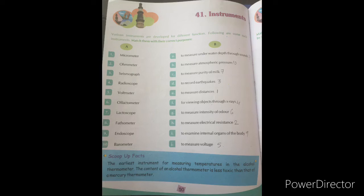Now six is olfactometer. Olfactometer is used to measure intensity of odor. That is point number G. Match it from point number G.